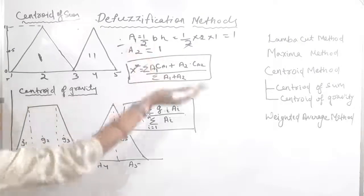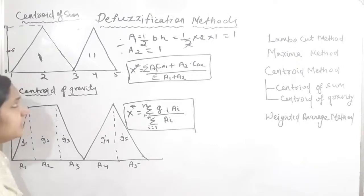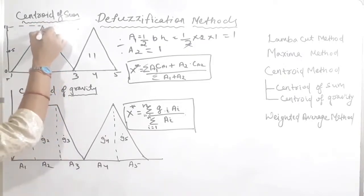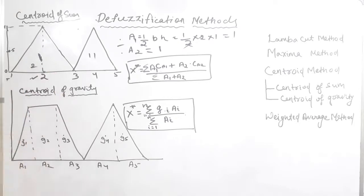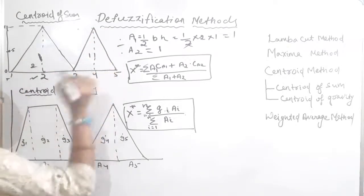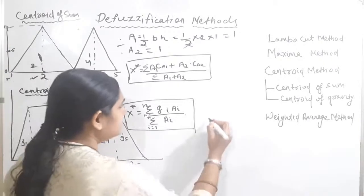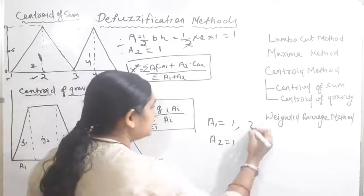If more triangles are given we would calculate their areas too, but here only two triangles are given. After calculating the areas, we calculate the centroid of each figure. The centroid means the middle point. For figure number one, if I draw a line, the centroid is at 2. For figure number two, the middle point gives a centroid of 4.